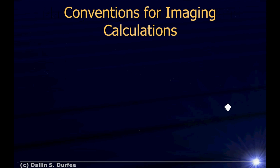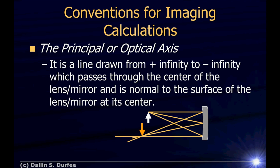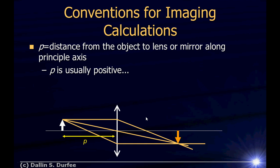Now, some conventions and definitions for imaging. We have the principal axis or optical axis: a line from plus infinity to minus infinity passing through the center of the lens or mirror, normal to its surface — kind of like an axis of symmetry. We use the variable P to represent the distance from the object to the lens or mirror along the principal axis. P is usually positive, but P can sometimes be negative.